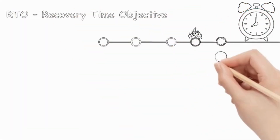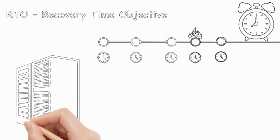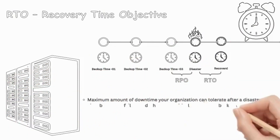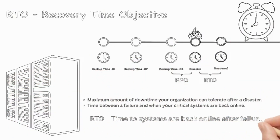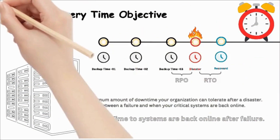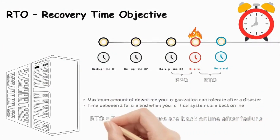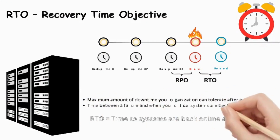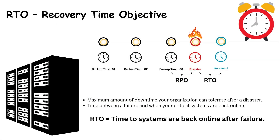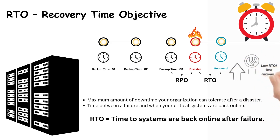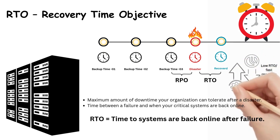Next, we have RTO, or Recovery Time Objective. RTO is the maximum amount of downtime your organization can tolerate after a disaster. Simply put, it's the time between a failure and when your critical systems are back online. The faster you recover, the lower the impact on your business.